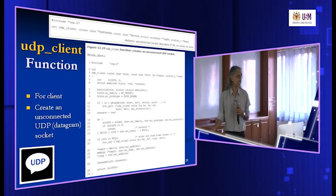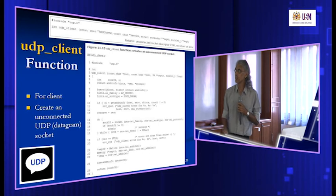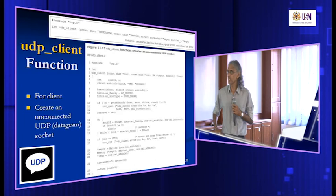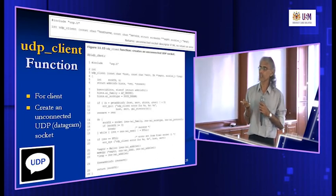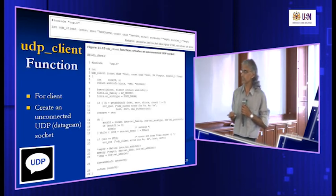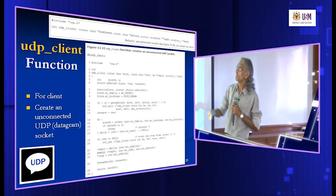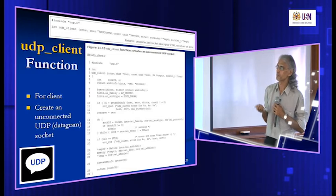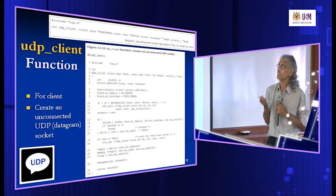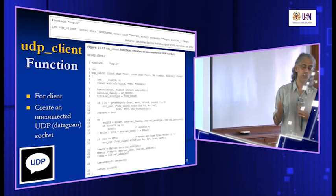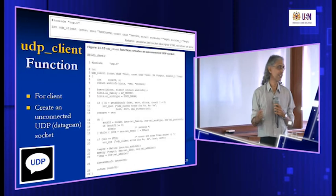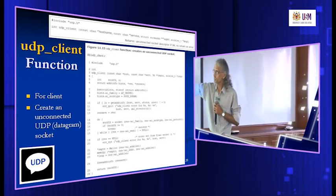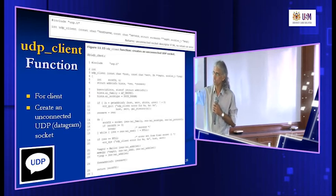Next, we look at the same daytime server and client but using UDP sockets. On the client side, instead of TCP connect, we call a UDP client function that creates an unconnected UDP socket. The parameters are host name, service name, socket address type, and length. The key difference is that we use SOCK_DGRAM to indicate we want to create a UDP socket. We go through the getAddressInfo result structures one by one and create a socket — but there is no connect call for UDP.